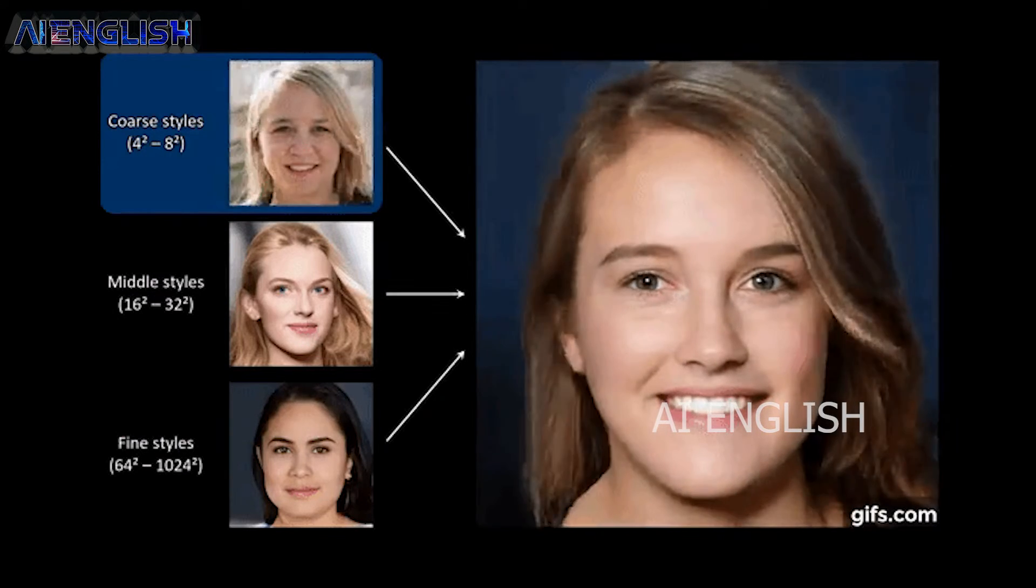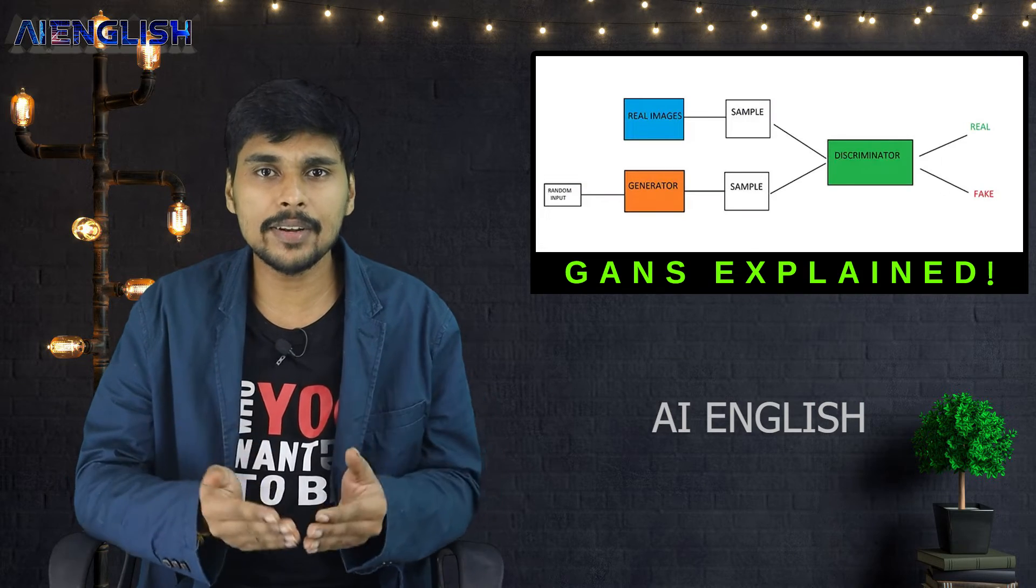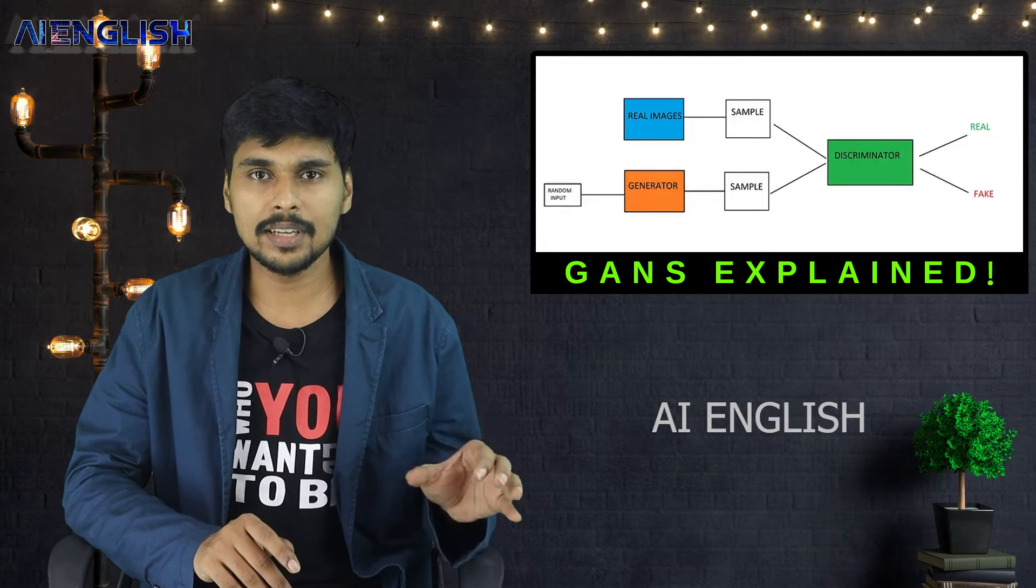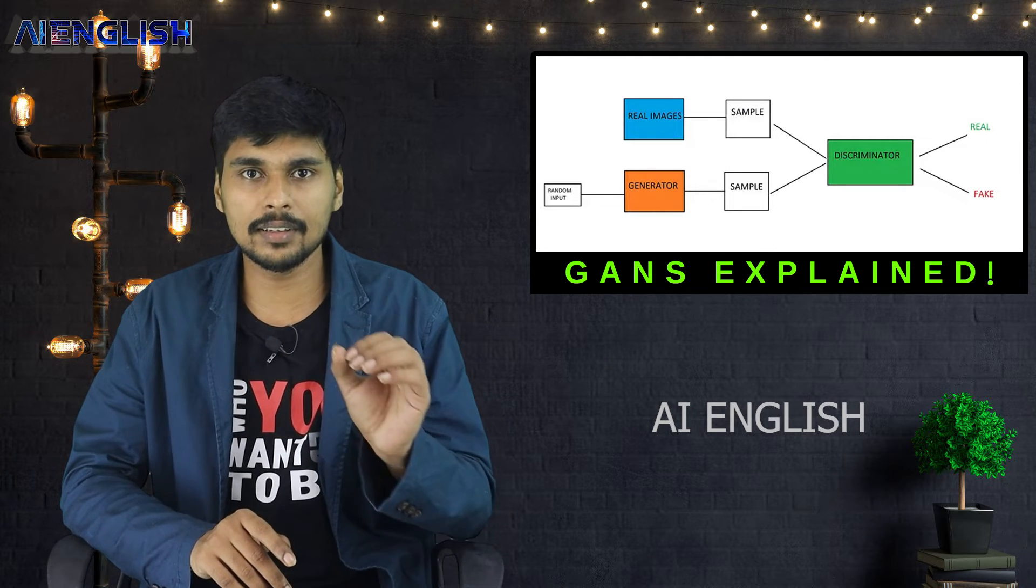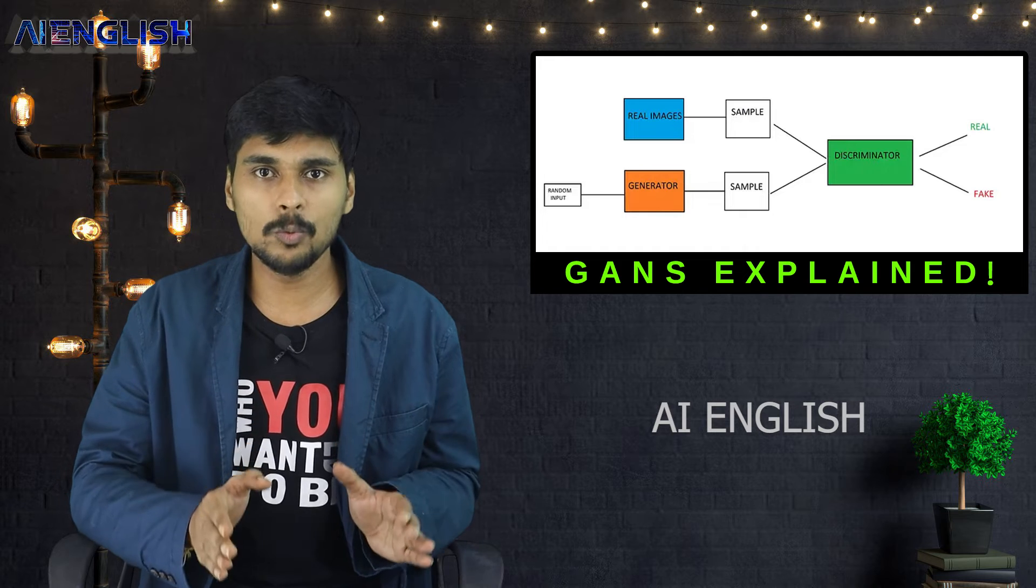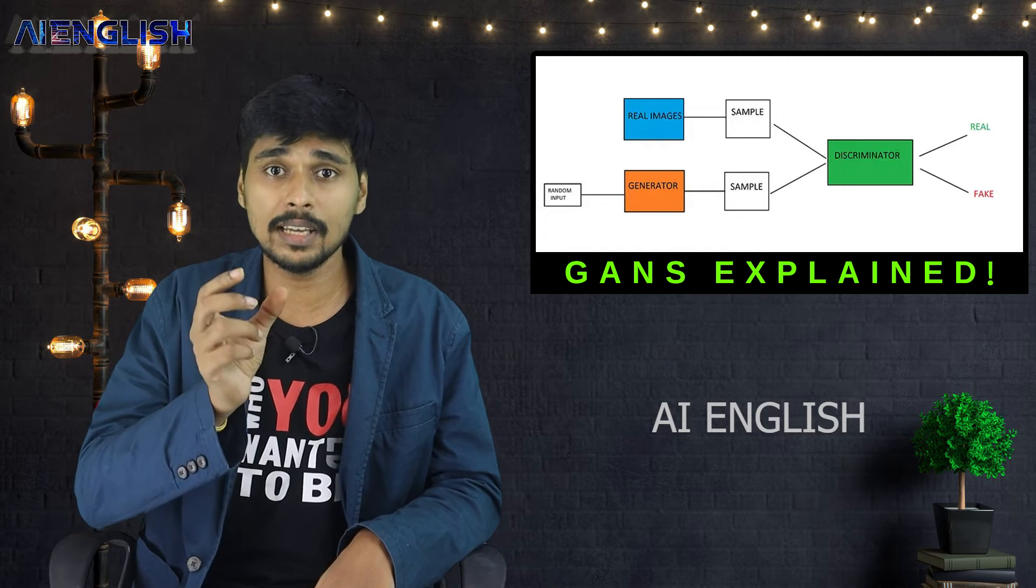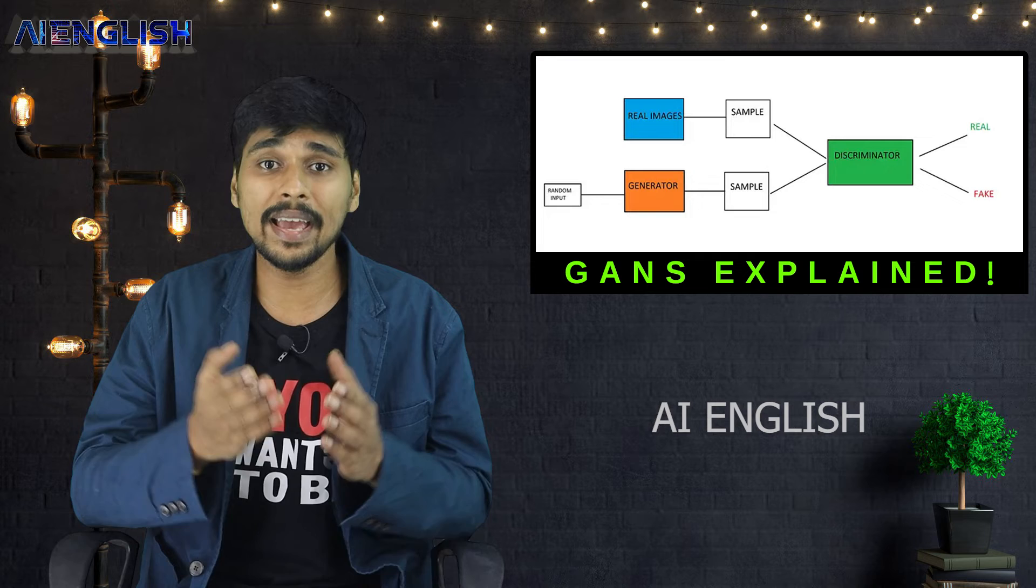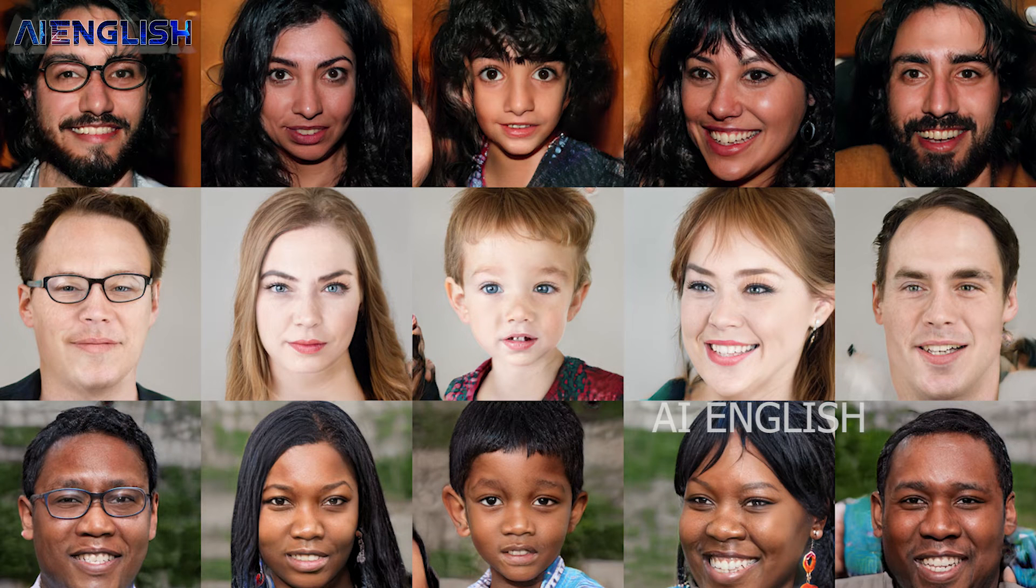how does FaceApp use Generative Adversarial Networks or GANs? As we discussed earlier, the generator and discriminator example. What FaceApp does is, initially before launching the artificial intelligence program into FaceApp, they do experiments with lakhs of images.